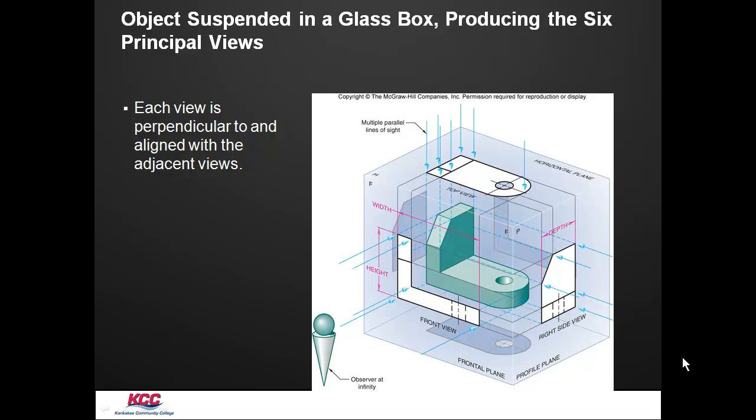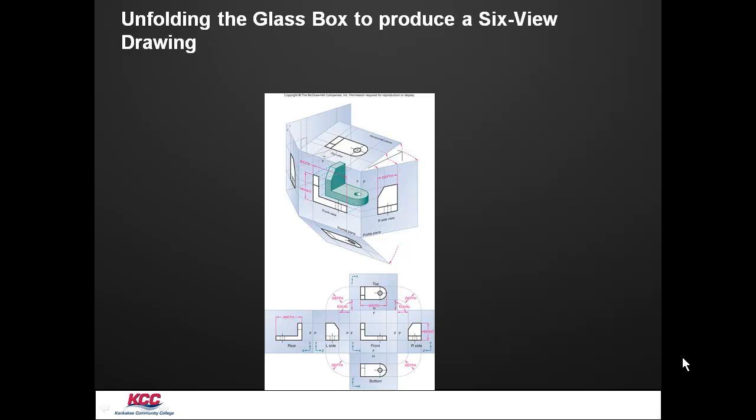You can pretend like the object is suspended in a glass box, and if you put some ink on the surfaces of the object and pressed it up against the glass box, you would get each view. Then we unfold the glass box to produce a six-view drawing, and we end up with each view then flat.